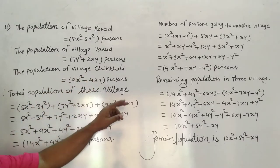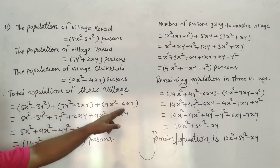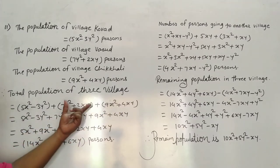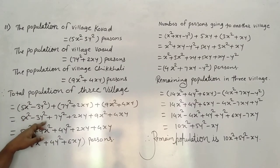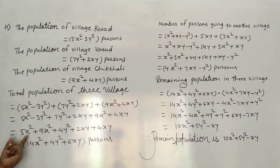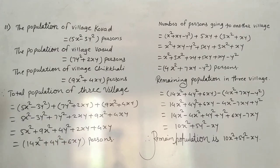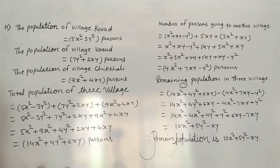Total population of the three villages: add all three. 5x² - 3y² + 7y² + 2xy + 9x² + 4xy. Grouping like terms: 5x² + 9x² = 14x², and -3y² + 7y² = 4y², giving 14x² + 4y² + 6xy as the total population.